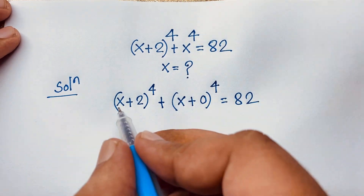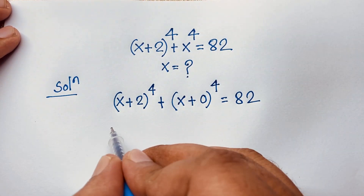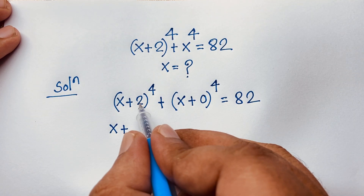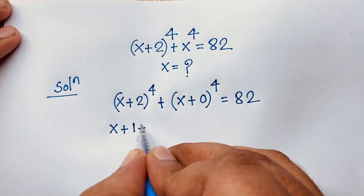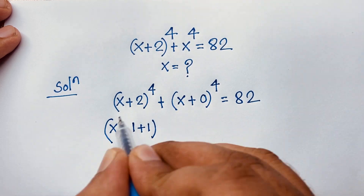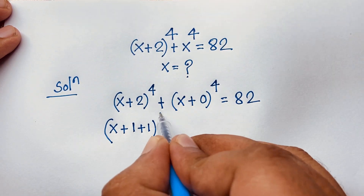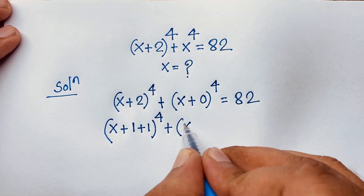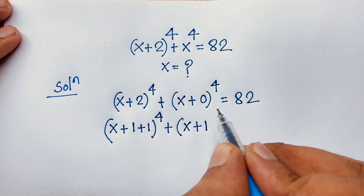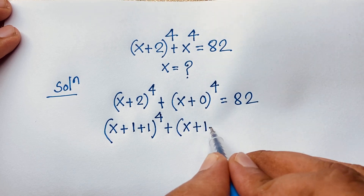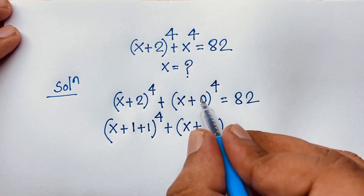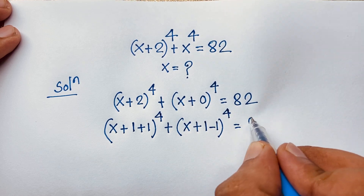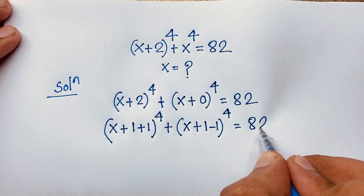At this moment, I can see this expression — it will be x plus these 2, and this 2 will be 1 plus 1, bracket, power is 4. Plus this expression, it will be x — I take here positive 1, then again I subtract this 1: (1 minus 1) it will be 0, and here power is 4, is equal to 82.